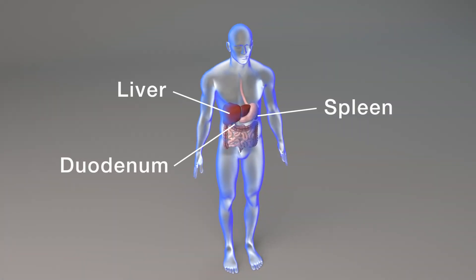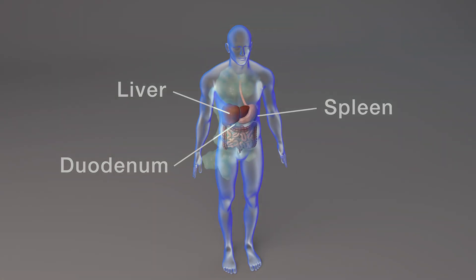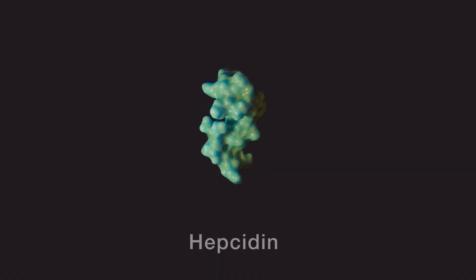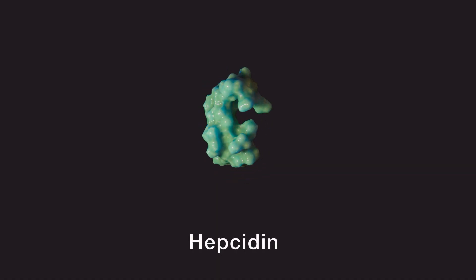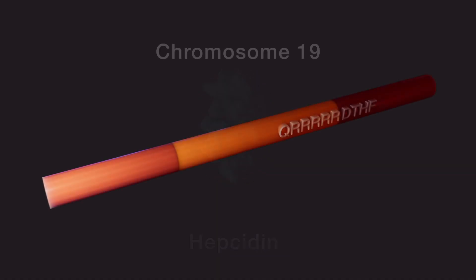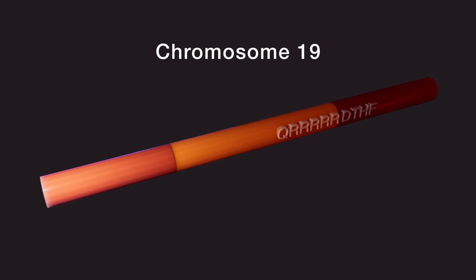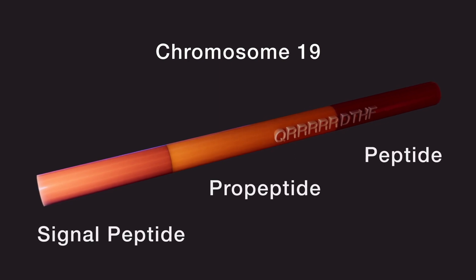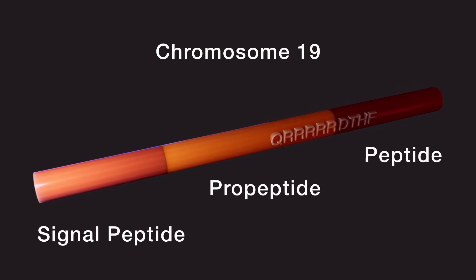Hepcidin is a peptide hormone synthesized in the liver in response to iron overload. The hepcidin gene, HAMP, is located on chromosome 19.